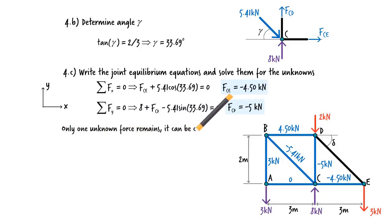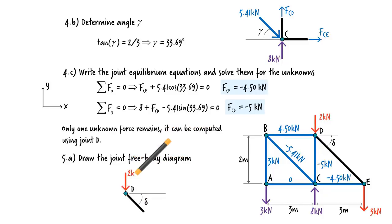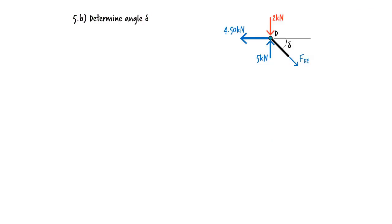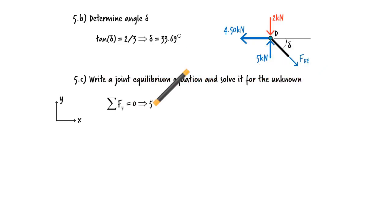One more unknown member force remains, the force in member DE. We can use joint D to determine this force. Here is the free body diagram for the joint. Angle delta equals 33.69 degrees. To determine FDE, we need only one equation. The sum of the forces in the y direction must be zero. Solving the equation for the unknown, we get... We are done!